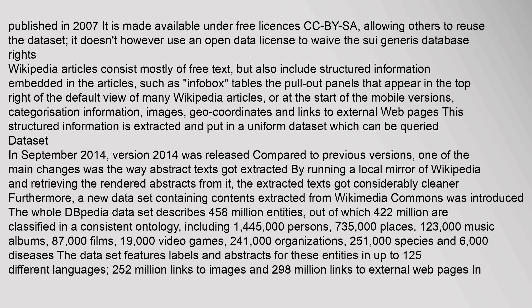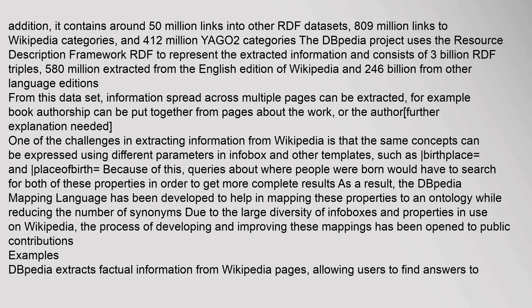The dataset features labels and abstracts for these entities in up to 125 different languages, 252 million links to images, and 298 million links to external web pages. In addition, it contains around 50 million links into other RDF datasets, 809 million links to Wikipedia categories, and 412 million YAGO2 categories. The DBpedia project uses the Resource Description Framework (RDF) to represent the extracted information and consists of 3 billion RDF triples — 580 million extracted from the English edition of Wikipedia and 2.46 billion from other language editions.